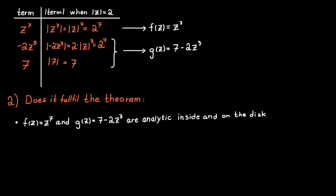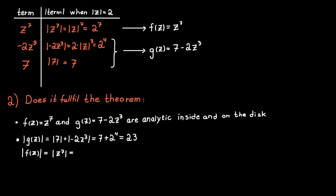The next step is to check that the absolute value of f is bigger than the absolute value of g on the disk. The absolute value of g on the disk equals the sum of the absolute values of each term. From the table above, this becomes 7 plus 2 raised to the power of 4, which equals 23. The absolute value of f is the absolute value of z to the power of 7, which equals 128. So the absolute value of f is indeed bigger than the absolute value of g on the disk.